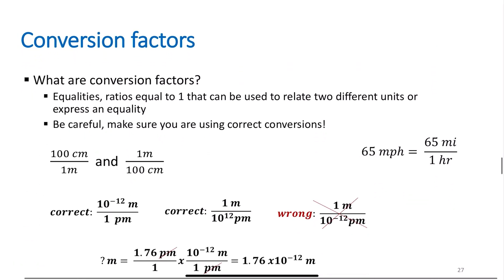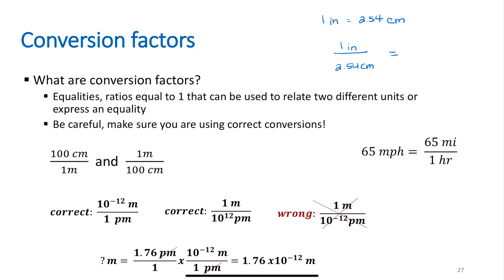Conversion factors are just an equality. If I have one inch, I have exactly 2.54 centimeters. That means one inch over 2.54 centimeters numerically equals one — the numerator and denominator are the same value, just in different units. These are equalities where the ratio equals one, and we use that to relate two different units.